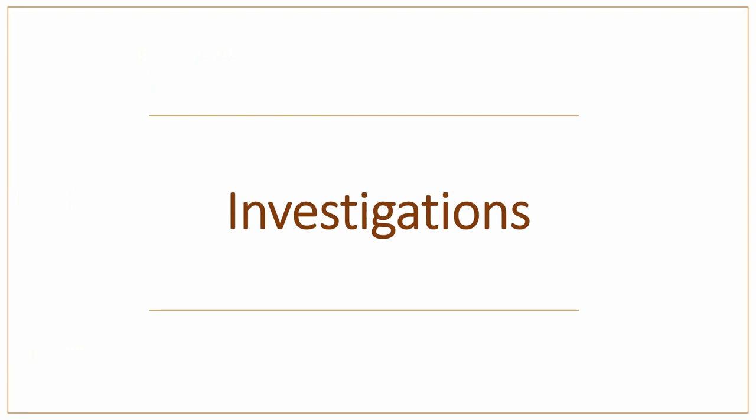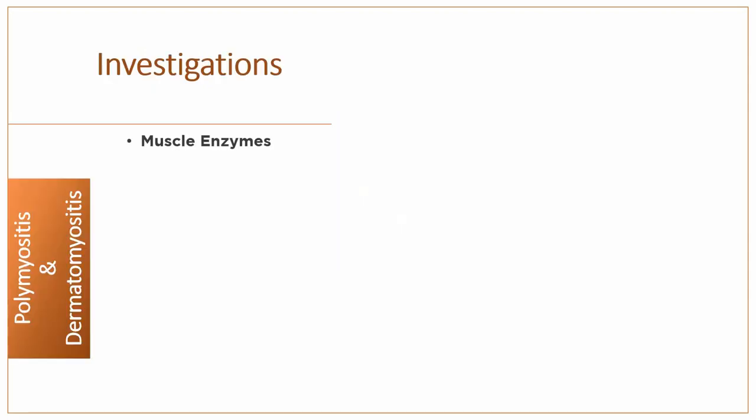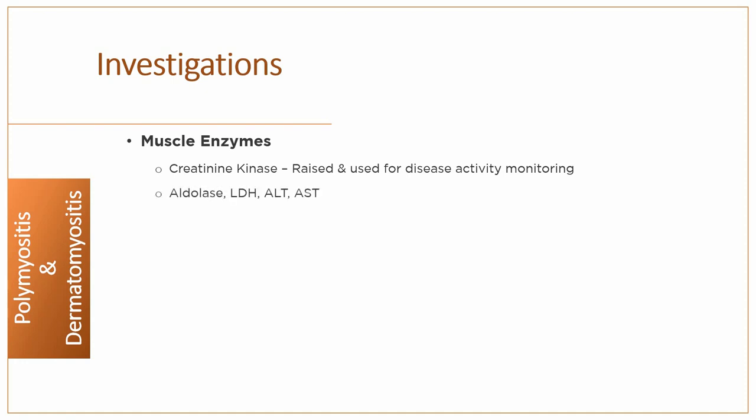Coming on to the diagnosis of the disease: serum levels of creatine kinase are typically raised and are a useful measure of disease activity, although a normal creatine kinase does not exclude the diagnosis, particularly in juvenile myositis. Other muscle enzymes — for example lactate dehydrogenase, aldolase, alanine transaminase and aspartate transaminase — are also raised in plasma.